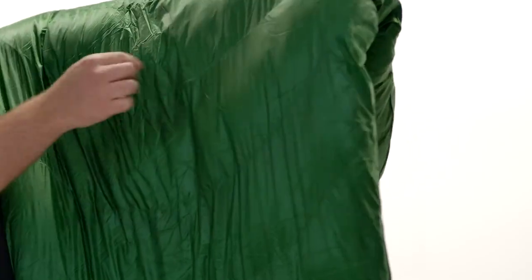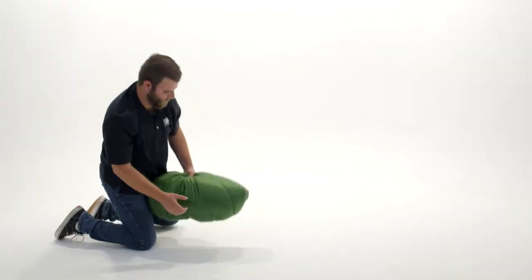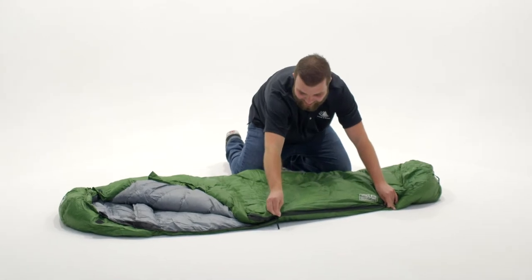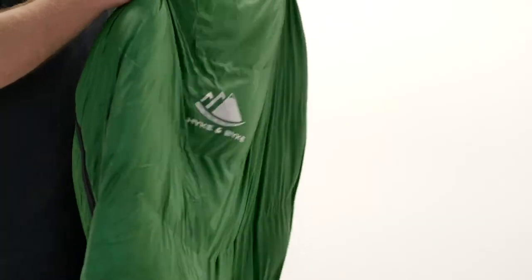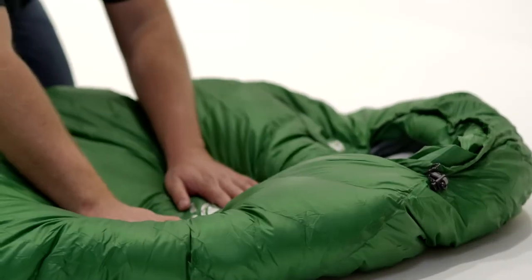For the design of these bags, we optimize the amount of fill inside each chamber to maximize the loft and minimize the size and weight. To accomplish this, we utilize a differential cut, which means the liner is actually a smaller bag encased in the larger outer shell. Additionally, we added a small channel along the left side of the bag to allow you to transfer fill from one baffle to another.